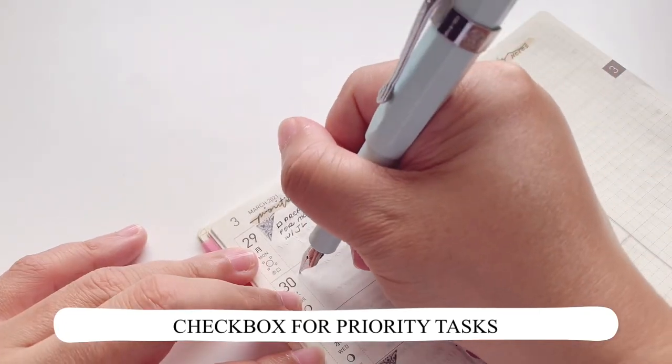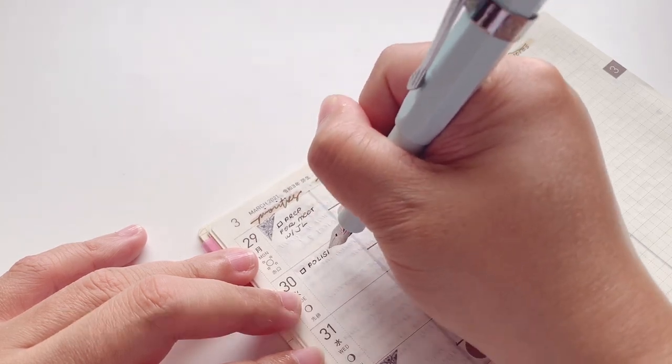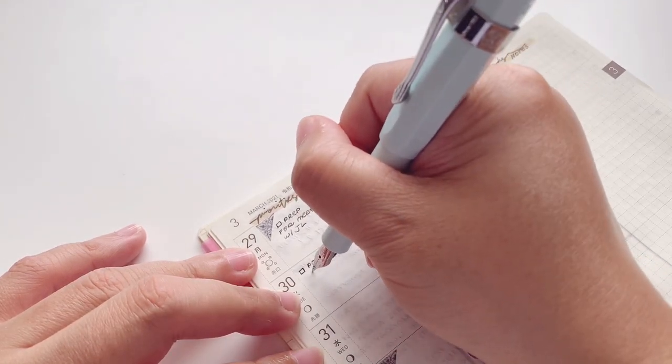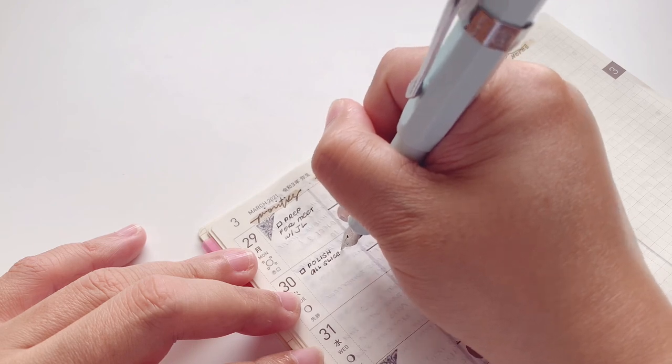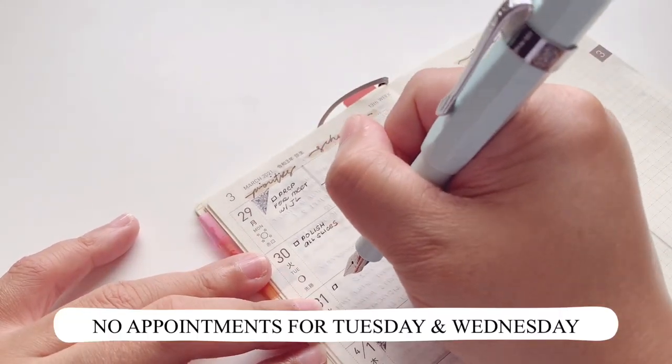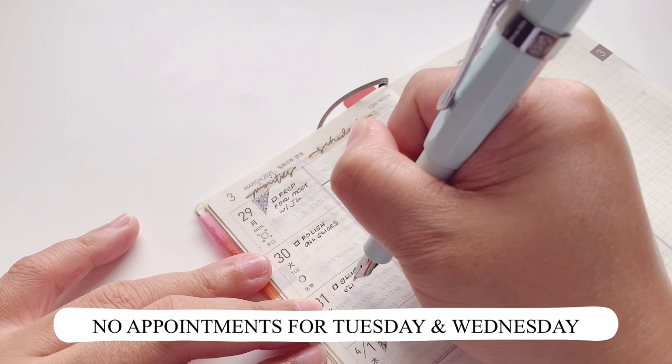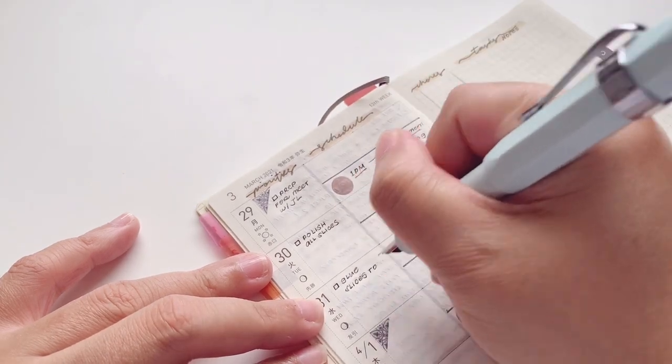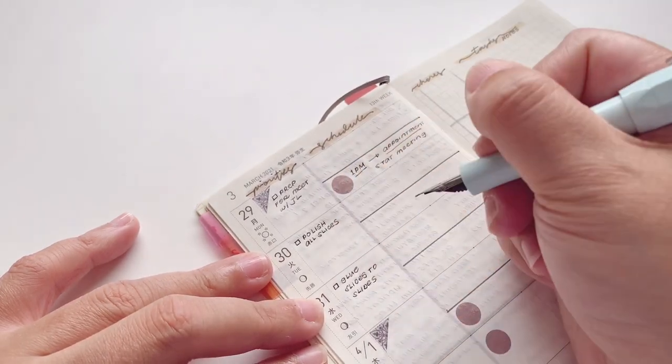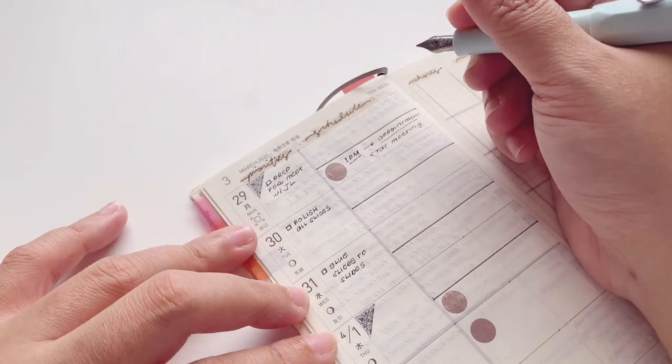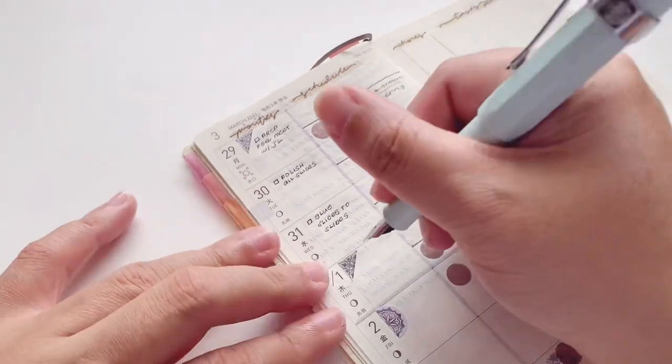For the priority tasks it has a checkbox just to make sure that I know if I have accomplished that task. For Tuesday and Wednesday I don't have a specific appointment which is why I have left that blank and just focused on priority tasks.